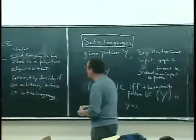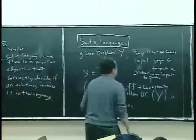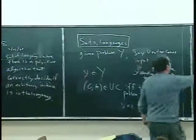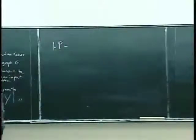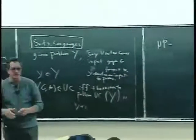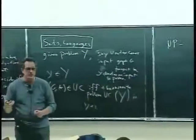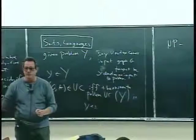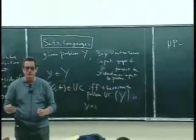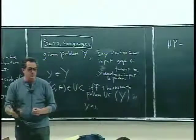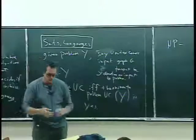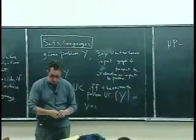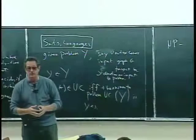So we've got P. Now NP — last time I said informally that was the set of problems such that there exists a polynomial time algorithm that can take in a proposed solution and check if that proposed solution is correct or not. And we saw some examples. For example, vertex cover is in NP.